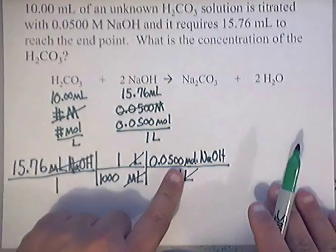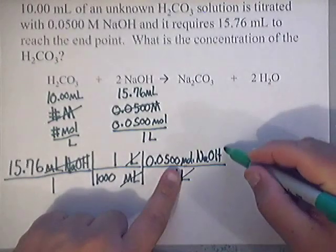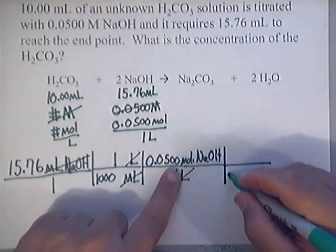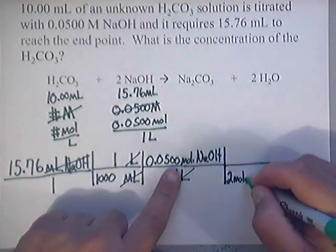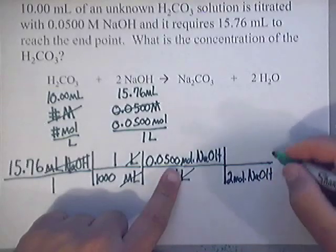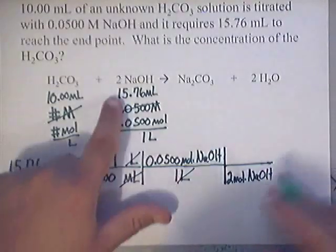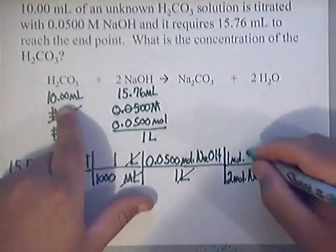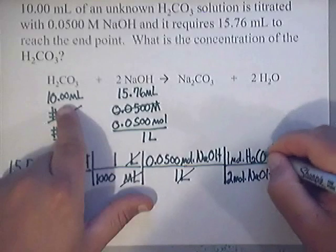Now, if this is the first time you've written moles, the second and third time is the molar ratio. Now, check this out. You've got two moles of NaOH, and here you've got one mole of H2CO3.